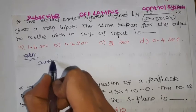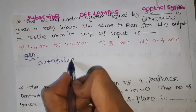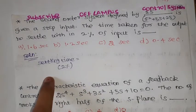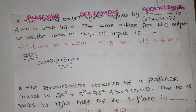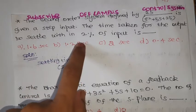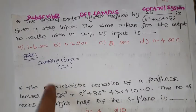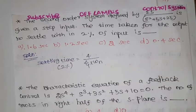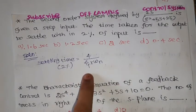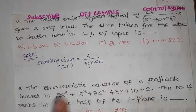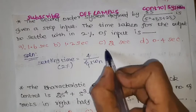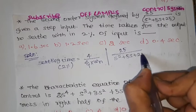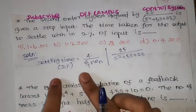What is the formula for settling time? There are two different formulas for settling time: one for 2% and one for 5%. Here we need to find out the settling time for the 2% criterion. For 2%, the settling time is 4 divided by zeta times omega_n, where zeta is the damping ratio and omega_n is the natural frequency. The given transfer function is 25 divided by s² plus 5s plus 25.